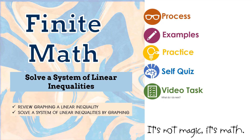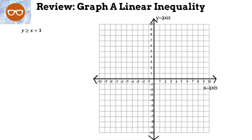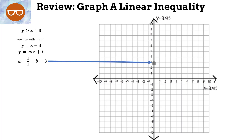Let's review graphing a linear inequality. We're going to graph y ≥ x + 3. The first thing we do is rewrite it with an equal sign: y = mx + b. My slope is 1 — rise over run — so I write it as a fraction. My y-intercept is 3. We graph the y-intercept at 3, then follow our slope: up 1 over 1, up 1 over 1.